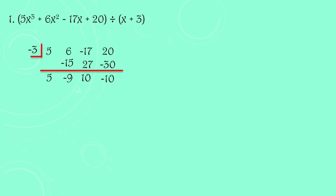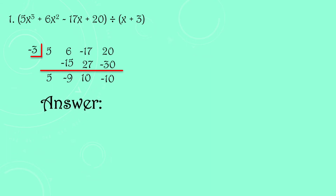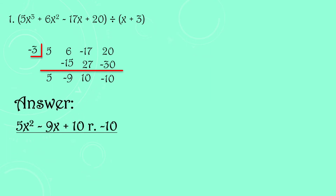The last number, negative 10, is our remainder. To find the degree of our quotient, subtract 1 from the degree of the dividend. The dividend's degree is 3, so minus 1 gives degree 2. Our answer is 5x² − 9x + 10 remainder −10, or written as 5x² − 9x + 10 − 10/(x + 3).